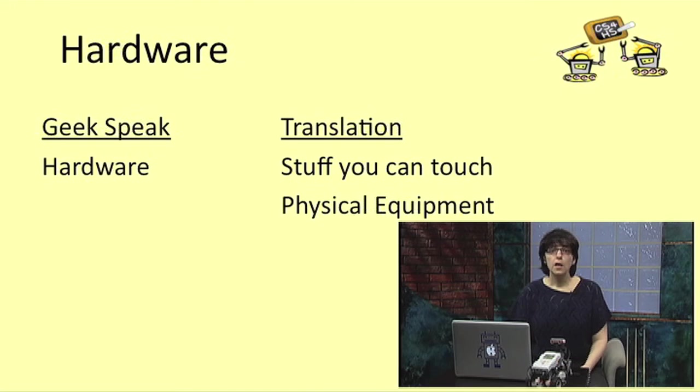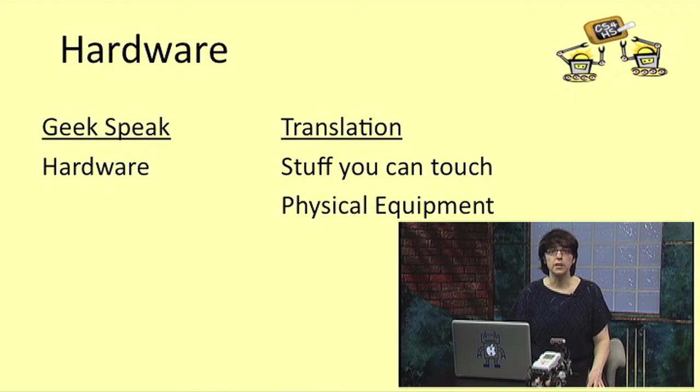Now it's time for us to get started with the fun stuff. In order to program a robot, you need to become familiar with the two different parts of the system: the hardware and the software. Your hardware is all the stuff you can touch — in other words, the physical equipment you're going to be using.